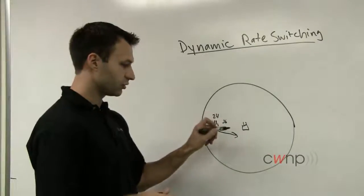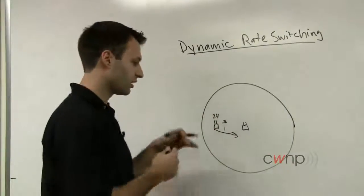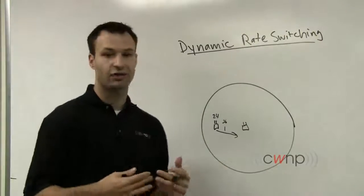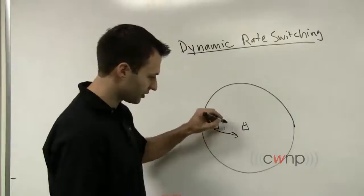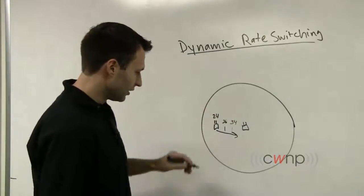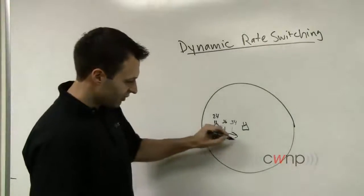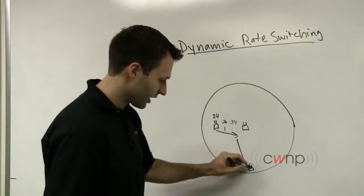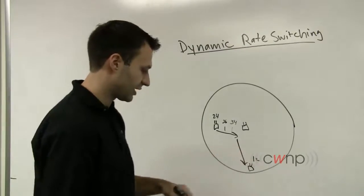But each one uses a pretty similar set of metrics and processes to say, as we get closer to the access point, the signal quality improves so we can use higher data rates. Maybe as it gets closer up to here, it's going to use 54 megabits per second. Then let's say it moves down to here. When it gets to the edge of the cell down here, it's going to go down to 12 megabits per second and so on.